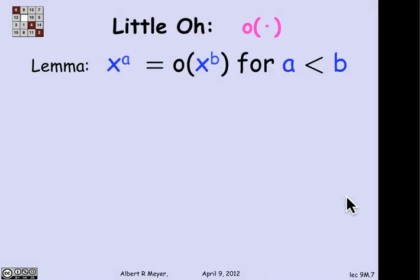Let's collect a couple of more basic facts about little o and big O that we're going to need. Namely, that if a is less than b, they can be negative numbers, I don't care, but real numbers, if a is less than b, then x to the a is little o of x to the b.